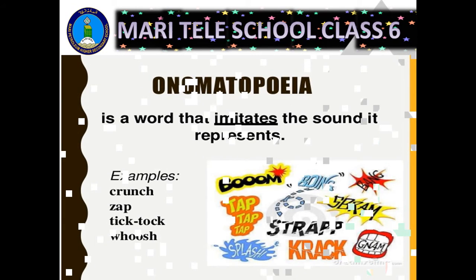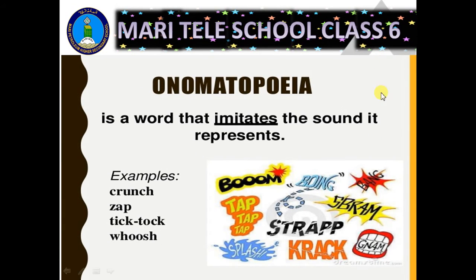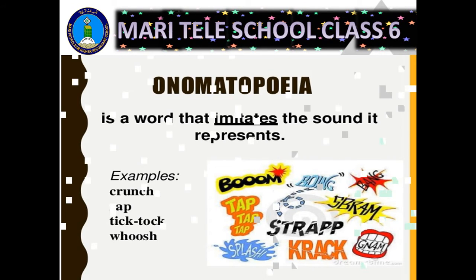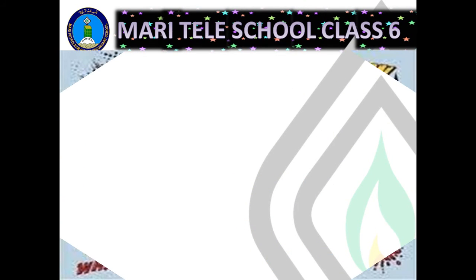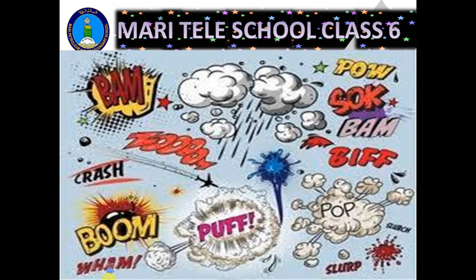Onomatopoeia is a word that imitates the sound it represents. Examples include crunch, zap, tick tock, boom, tap tap, poof, pow, biff, bam, zoom, crash, and bop. All these are examples of onomatopoeia — they are sounding words.